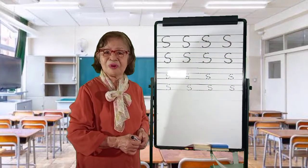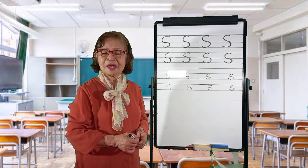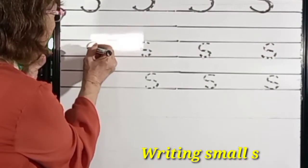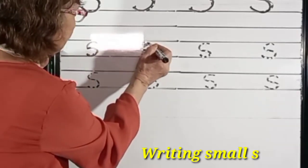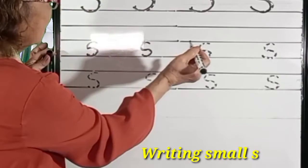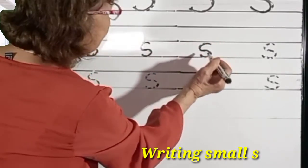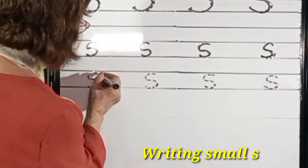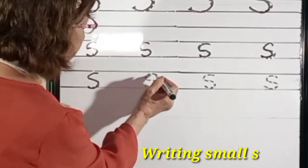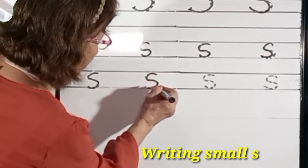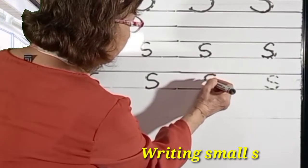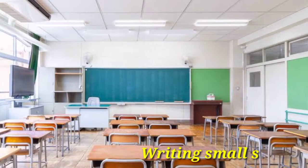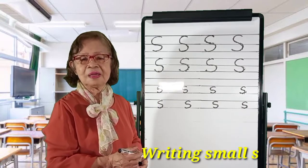Now let's go to the small s. Small s is just the same but a little curve and then a curve again going down a bit. From the top you curve again and curve going down. You make a curve and go down — it's also a curve. So we finish making our capital S and small s.